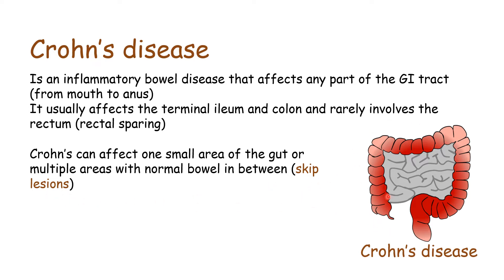Here in this image we can see it even shows a little bit of rectal sparing. We can see areas of the bowel that are affected by the disease, then areas of normal bowel, then affected bowel, normal bowel, and so on. This is characteristic of Crohn's disease — these skip lesions.